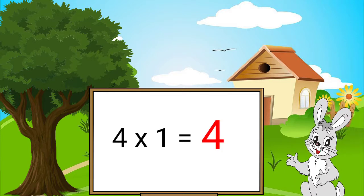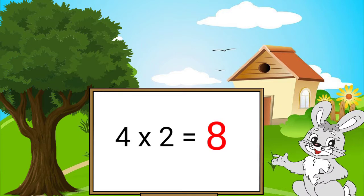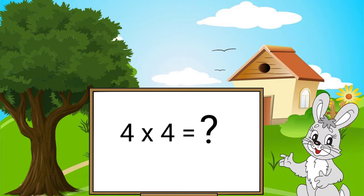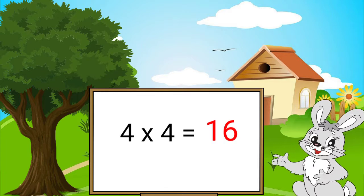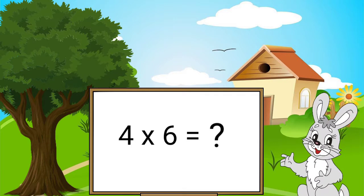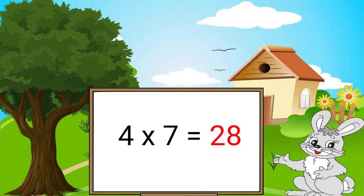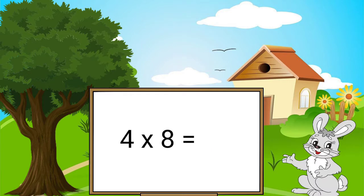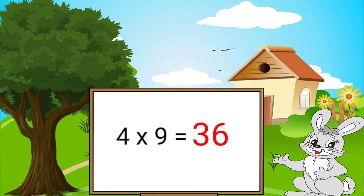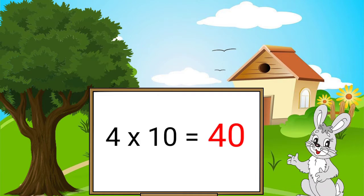4 1's are 4, 4 2's are 8, 4 3's are 12, 4 4's are 16, 4 5's are 20, 4 6's are 24, 4 7's are 28, 4 8's are 32, 4 9's are 36, 4 10's are 40.